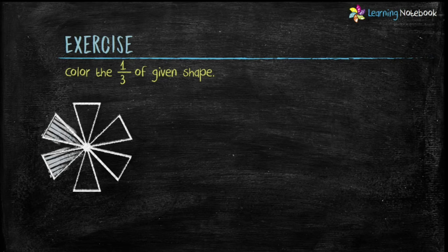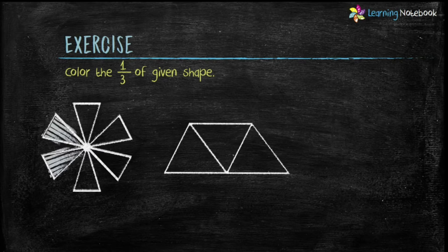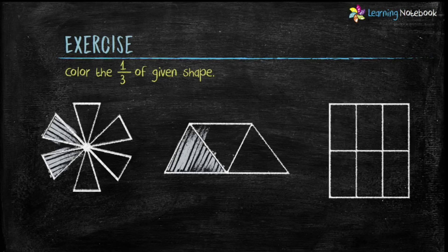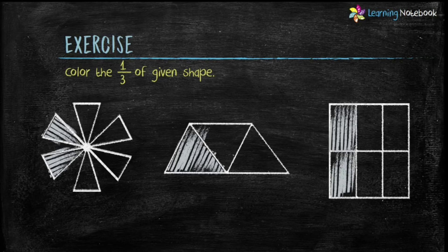Now let's take a look at the second shape. How many parts does it have? It has 3 parts, and we have to color one-third of this figure. So divide 3 by 3. We get 1. Therefore, color 1 part of this shape. Now let's look at the third figure. This shape has 6 parts, and we have to color one-third of the given shape. So divide 6 by 3. We get 2. So color 2 parts of this figure.